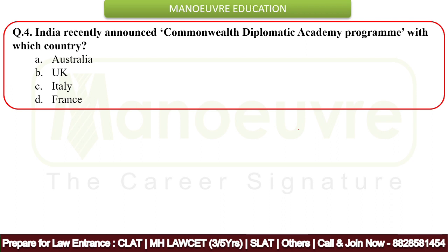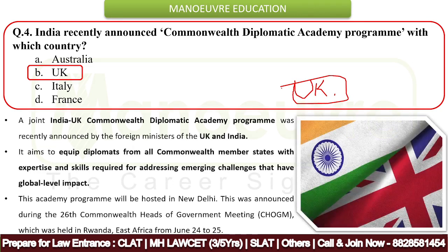Next question: India recently announced the Commonwealth Diplomatic Academy program with which country? The correct answer is the United Kingdom — option B. A joint India-UK Commonwealth Diplomatic Academy program was recently announced by the foreign ministers of both countries, with the aim of building expertise and skills required for addressing emerging challenges at a global level. This is the 26th Commonwealth program and will be conducted in East Africa — Rwanda — from 24th to 25th June.